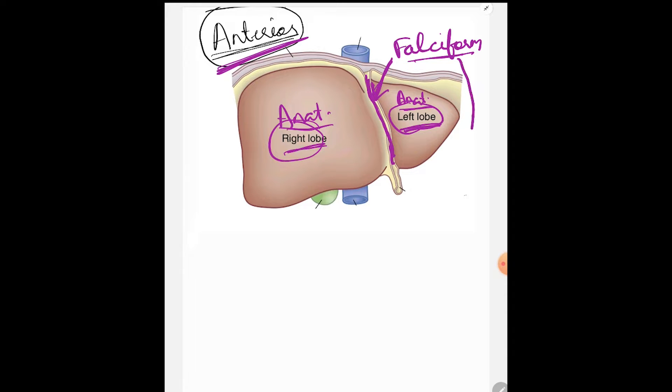You may be asked a sub-question about falciform ligament. What is falciform ligament derived from? If that is asked, your answer is ventral mesogastrium. I'll talk about what this ventral mesogastrium is in another video on development but now I'm focused on the spotters on the anterior surface of liver.